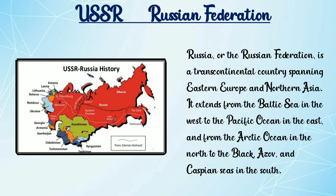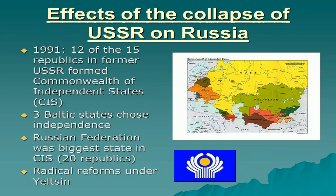In 1991, 12 of 15 republics of the former USSR formed a Commonwealth of Independent States. The Russian Federation was the biggest state in the CIS, with 20 republics and radical reforms under Yeltsin. Children, you all understand that USSR is now the Russian Federation. The new name is the Russian Federation.